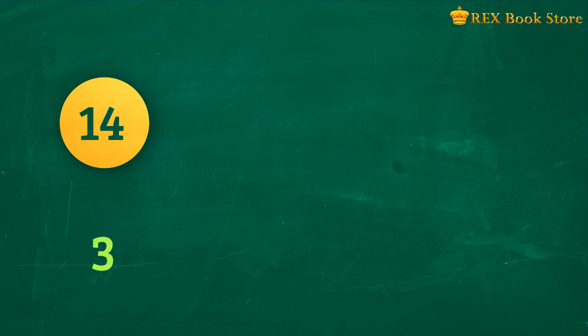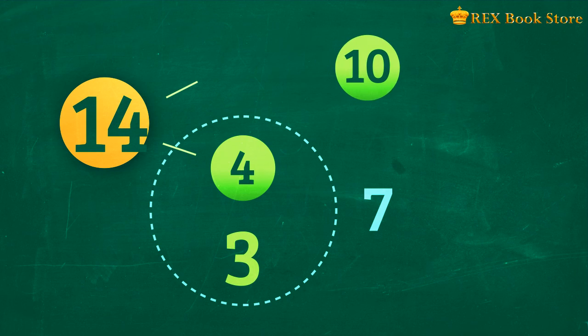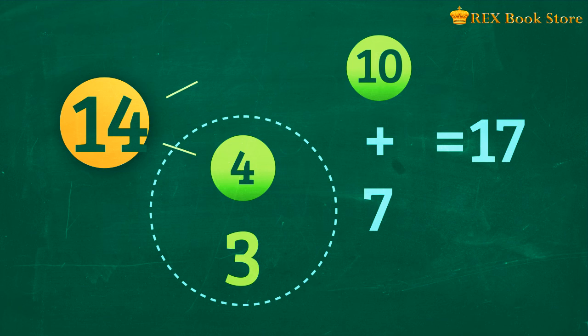Can you try this on your own? What is 14 plus 3? Use number bonds to show your answer. 14 plus 3 is equal to 10 plus 7. 10 plus 7 is equal to 17. So 14 plus 3 is equal to 17.